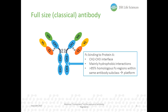For full-size classical antibodies that contain an Fc region, the standard capture step is done with protein A. The binding of protein A to the Fc region is well described and takes place at the juncture of the constant domains CH2 and CH3 of the heavy chains. This binding consists primarily of hydrophobic interactions, and since antibodies of the same subclass have over 95% homology in the Fc regions, protein A is a suitable capture platform for a wide range of antibodies.